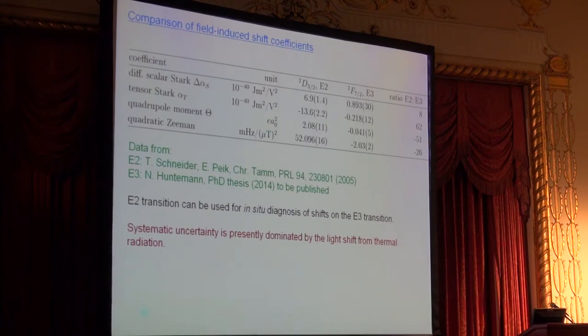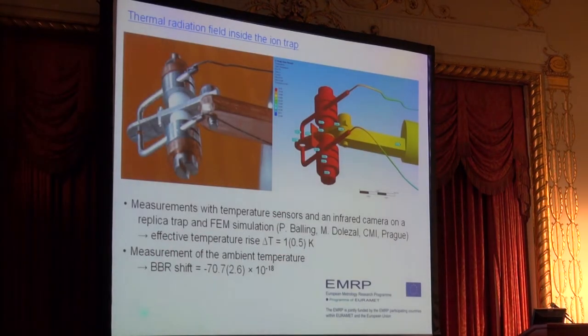Presently, the systematic uncertainty—very much like in the talk just presented by Andrew Ludlow—is dominated by the light shift from thermal radiation. We did some analysis of the thermal radiation environment in the trap. The trap itself may heat up during operation due to the currents flowing there. It is composed of different materials—insulators and metals—that have different losses and different emissivities. Together with the group from CMI, the Czech Metrology Institute, we did a careful analysis of the thermal field. It looks inhomogeneous, but finally the result is that the effective temperature rise seen by the ion is only about one kelvin above room temperature. The uncertainty is big, but it does not matter very much. The correction for the black body shift is dominantly still dominated by the uncertainty in the polarizability measurement, which we have determined via light shift measurement to the level of about three percent. Fortunately, in ions, these shifts tend to be smaller than in neutral atoms. The total shift at room temperature is seven parts in 10^-18, and we can control it with a few percent.